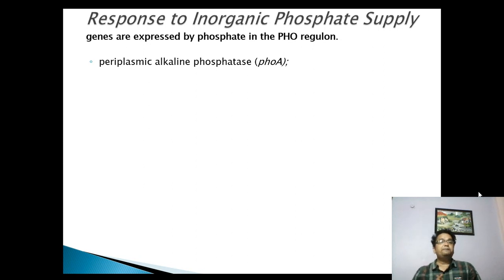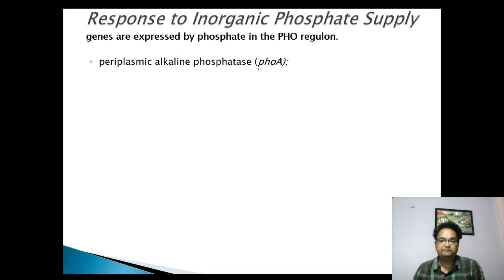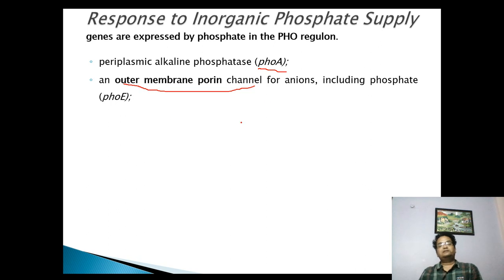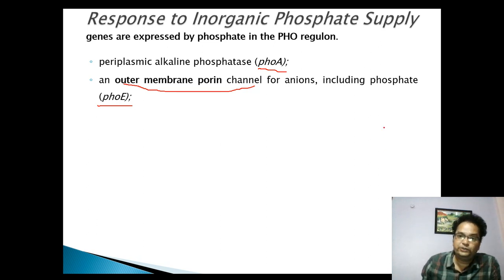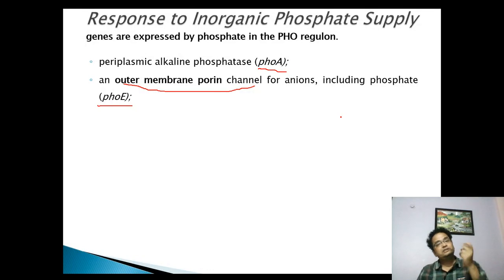It includes the periplasmic alkaline phosphatase encoded by PHOA. PHOA acts as the gene for synthesis of periplasmic alkaline phosphatase. The outer membrane porin channels are also synthesized by this system. Porin channels are non-specific in the uptake of solutes and usually permit small hydrophilic molecules and ions to enter into the periplasm.